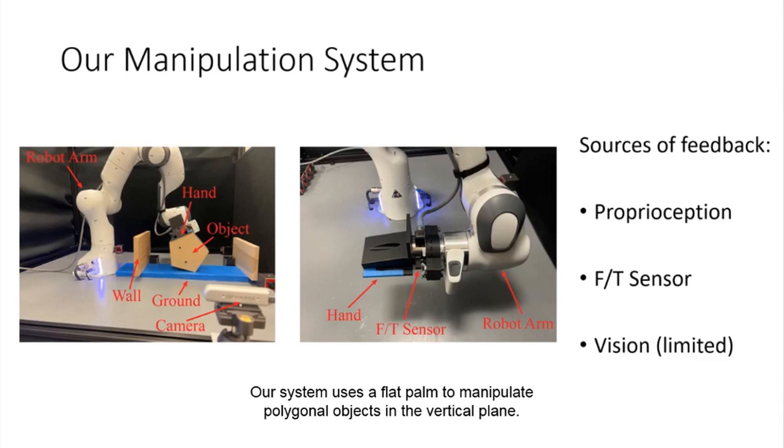Our system uses a flat palm to manipulate polygonal objects in the vertical plane. The environment consists of the ground and up to two vertical walls. Our primary sources of feedback are robot proprioception and a force torque sensor in the wrist. We also use a limited amount of visual feedback to provide an object shape prior for our estimator.